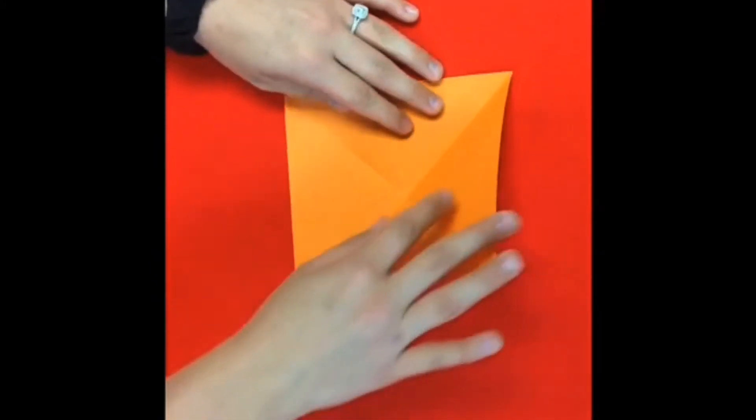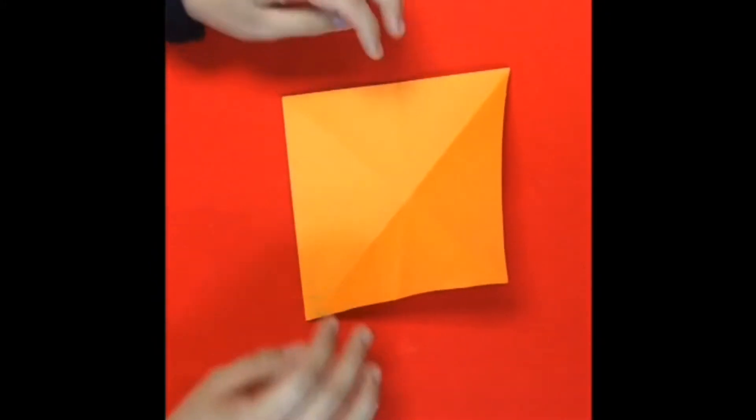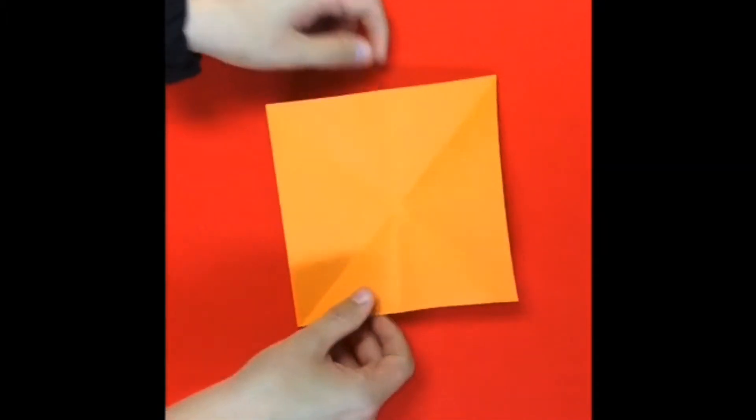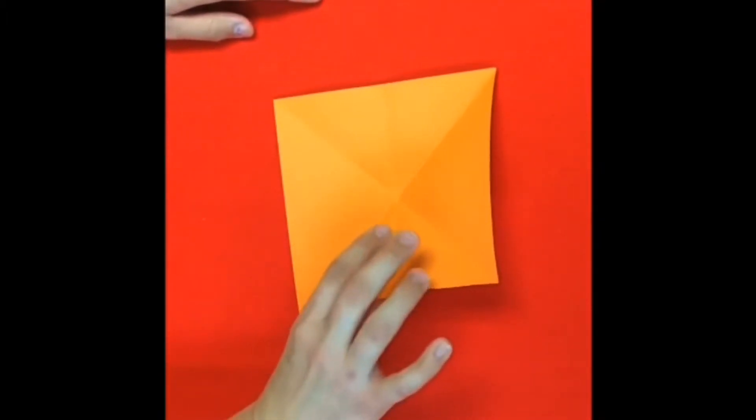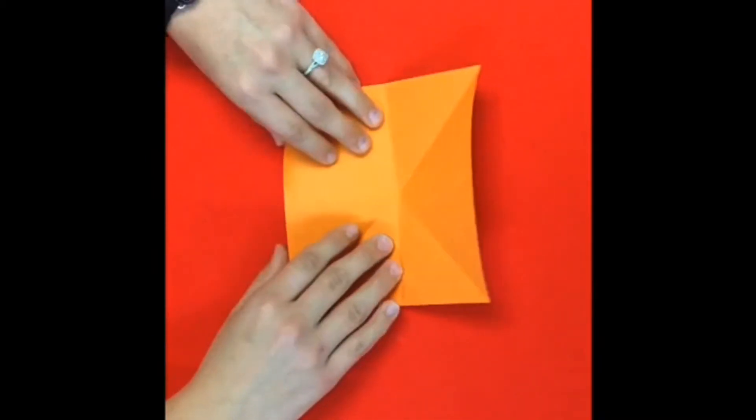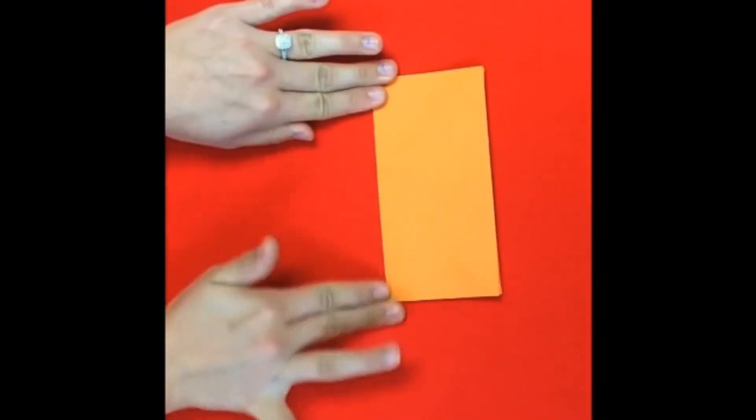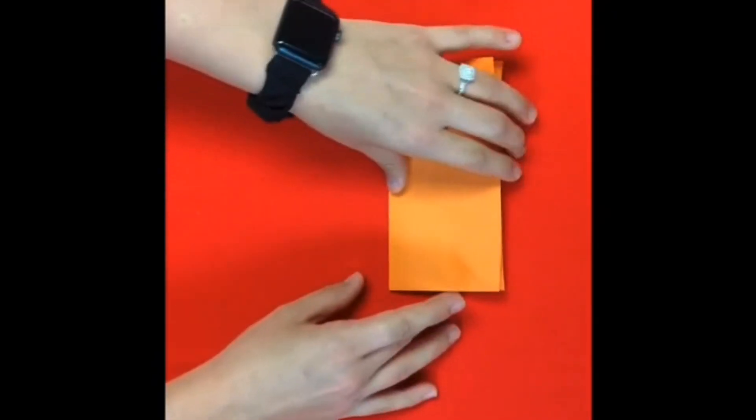You should see two larger triangles and two smaller triangles with all the creases. Now you're going to fold the square in half and then you should unfold it.